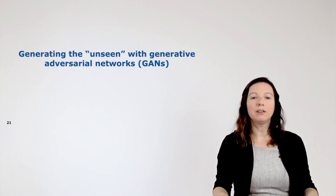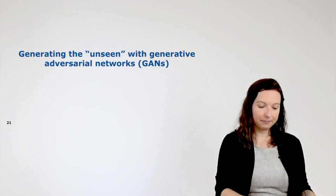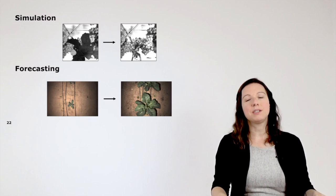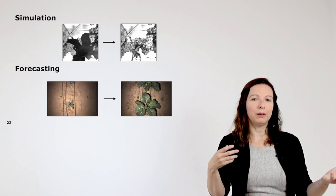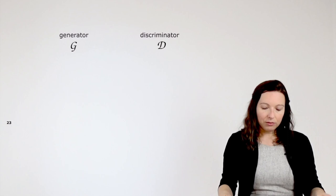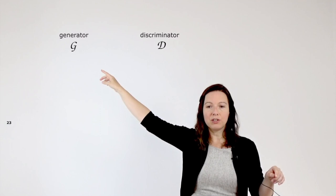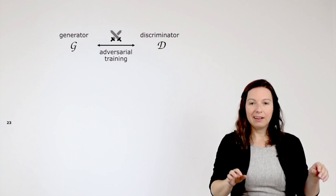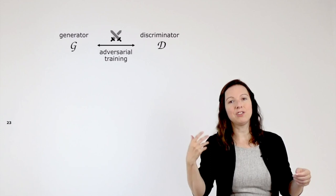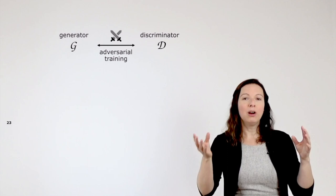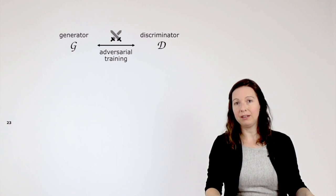I want to specifically talk about generative adversarial networks and how they can generate the unseen, with two examples developed in my group: one is simulation and the other is forecasting — one deals with grapes and the other with cauliflower. Generative adversarial networks consist of two networks: a generator G and a discriminator D. Both have different goals and constantly fight against each other during the model learning process — this is called adversarial training. In a nutshell, the goal of the generator is to generate images, and the goal of the discriminator is to distinguish between real images and images generated by the generator.